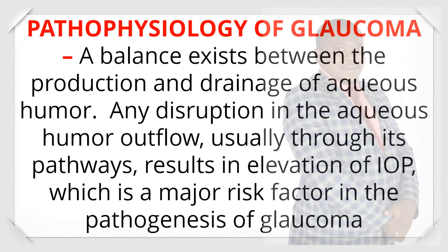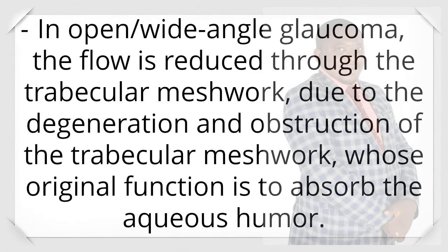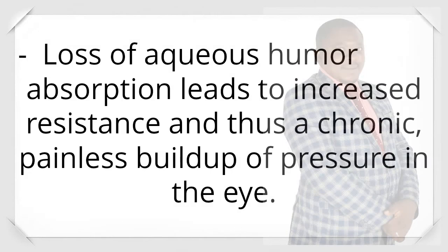Pathophysiology of glaucoma: a balance exists between the production and drainage of aqueous humor. Any disruption in the aqueous humor outflow, usually through its pathways, results in elevation of IOP, which is a major risk factor in the pathogenesis of glaucoma. In open-angle glaucoma, the flow is reduced through the trabecular meshwork due to degeneration and obstruction of the trabecular meshwork, whose original function is to absorb the aqueous humor. Loss of aqueous humor absorption leads to increased resistance and thus a chronic painless buildup of pressure in the eye.